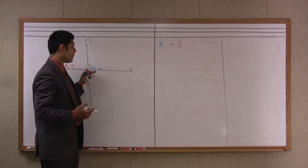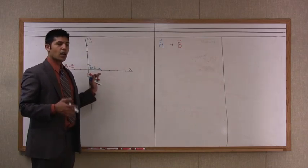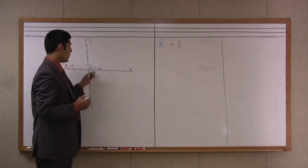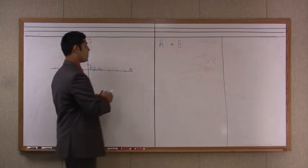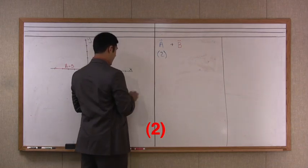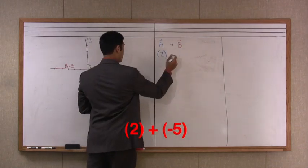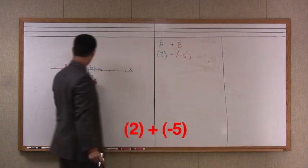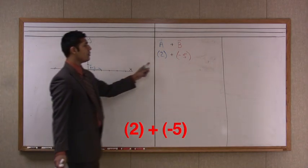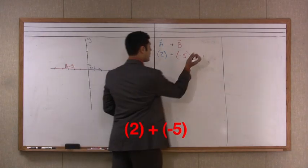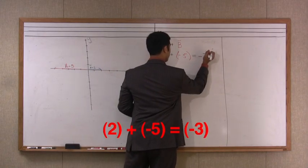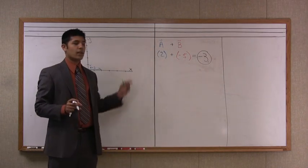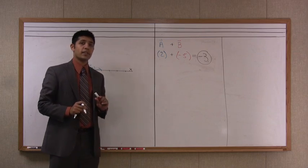Now when the problem is simple like this and all the vectors are on one axis, all we really have to do is put the values in here. And so simply we can say that vector a is equal to two. And we can add it to vector b, which is equal to negative five units. And two plus negative five is going to give me negative three. So that's the mathematical way to solve for this problem of vector a plus vector b.